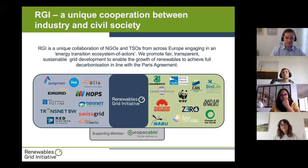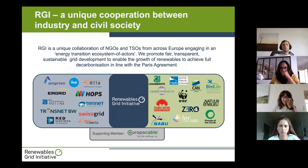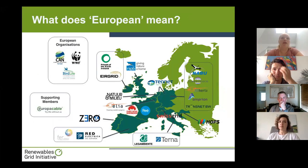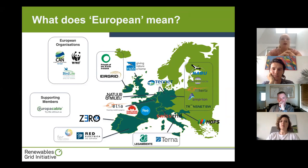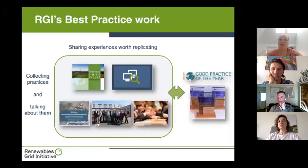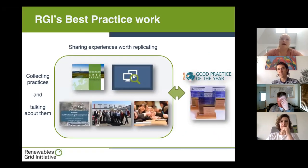RGI has an unlikely combination of transmission system operators and climate and nature NGOs, who decided to work together under the roof of RGI to work on the energy system of the future. Our members really come from all across Europe, representing a good portion of the European energy system within our membership.